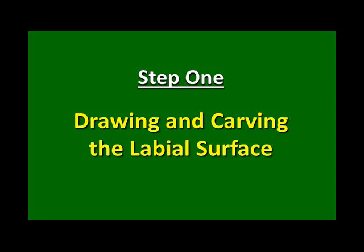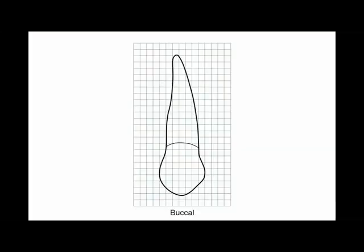Step 1. Drawing and carving the labial surface or buccal surface. This is the buccal surface of the maxillary first premolar. The crown is 8.5 mm long while the root is 14 mm long.